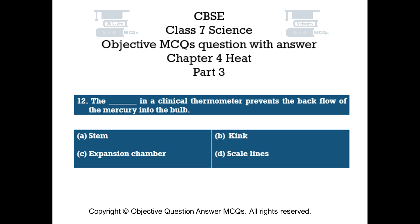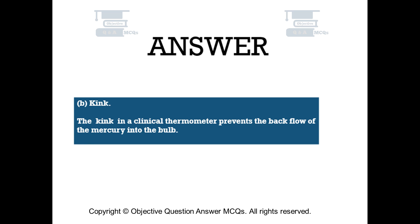Question number 12. The blank in a clinical thermometer prevents the back flow of the mercury into the bulb: Option A stem, Option B kink, Option C expansion chamber, Option D scale lines. The right answer is Option B — kink. The kink in a clinical thermometer prevents the back flow of the mercury into the bulb.